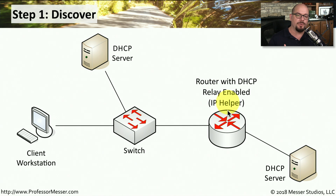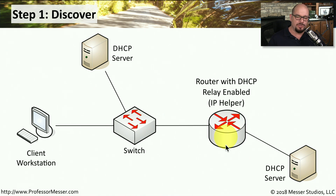Sometimes you'll hear this referred to as an IP helper address. This tells the router that if it ever sees any requests for DHCP, to also send them to the DHCP server that's outside of our local subnet.